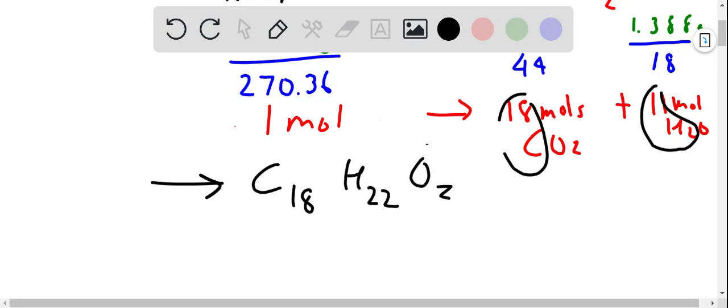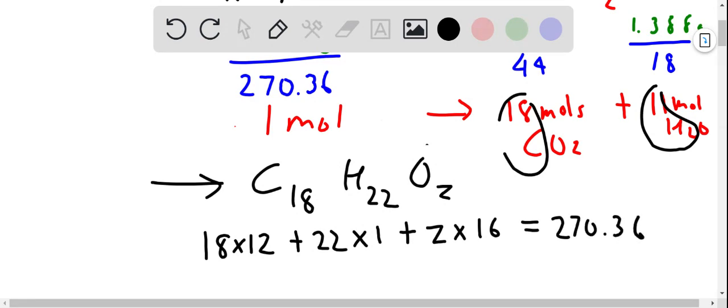Now, if you want to find out the amount of OZ, simply let's find out the molecular weight of this. So it's 18 times 12 for carbon, plus 22 times 1 for hydrogen, plus Z times oxygen 16 equals 270.36. You can solve this to get Z equal to 2.